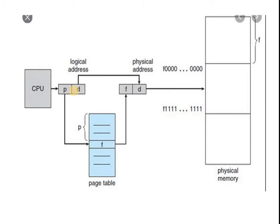The page size is equal to the frame size. In paging technique, some terminologies are used. Logical address, also called virtual address, is the address generated by the CPU. Logical address space or virtual address space is represented in words or bytes and is the set of all logical addresses generated by a program. Physical address is the address actually available on the memory unit. Physical address space is the set of all physical addresses corresponding to the logical addresses.